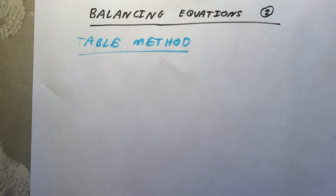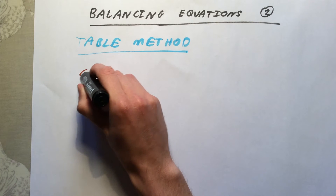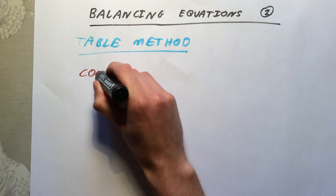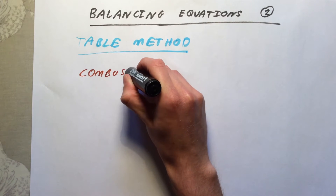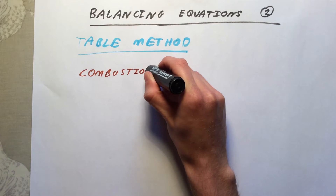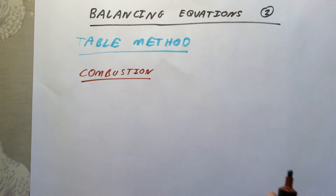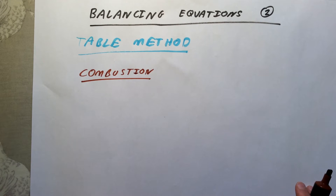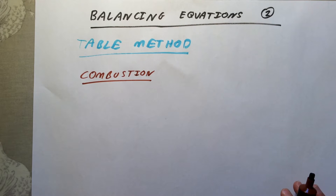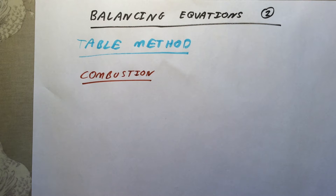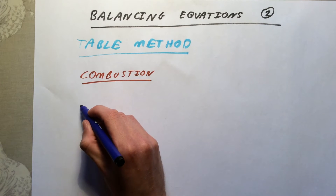We are going to look at two different combustion reactions in this video. A combustion reaction is any reaction where fuel burns with oxygen. We're going to particularly look at what we call complete combustion, and we'll talk about what we make in these reactions and how to balance the equations. The first one we are going to look at is the combustion of methane gas, which is CH4.